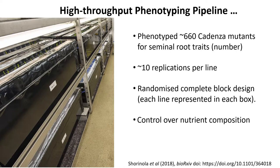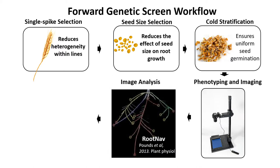Now that we have the platform, we phenotyped about 660 Cadenza mutant lines with about 10 replications per line using a randomized complete block design. I selected single spike seeds from single spikes to reduce heterogeneity, did seed size stratification to reduce the effect of seed size, performed cold stratification for uniform germination, then did the phenotyping and image analysis with a software called RootNav, followed by statistical analysis.